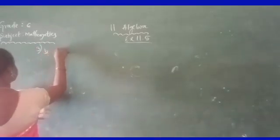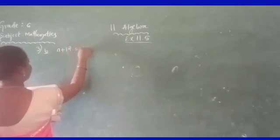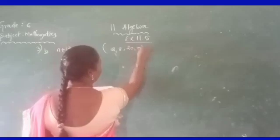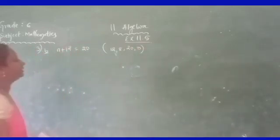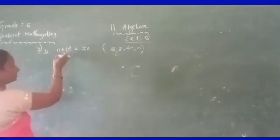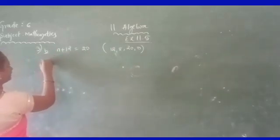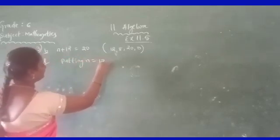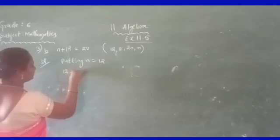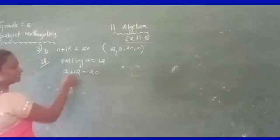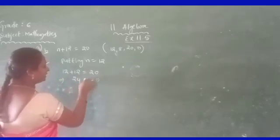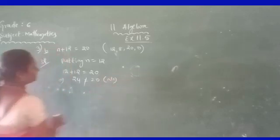Next, come to part b: M plus 12 is equal to 20. The variable values to test are 12, 8, 20, and 0. Let us check. Put M equal to 12: 12 plus 12 is 24. Is 24 equal to 20? No, it does not satisfy the equation.